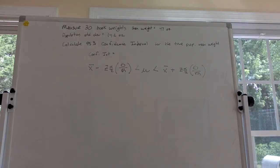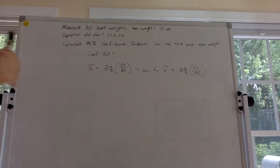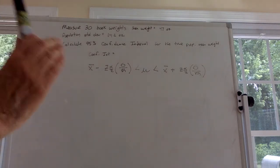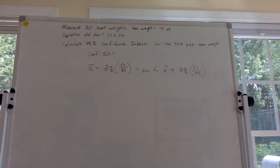They want us to come up with a 95% confidence interval. What that means is if you took a sample of 30 books over and over again, 95% of the time the mean weight for each sample will fall within this range of numbers. That's basically what it is.